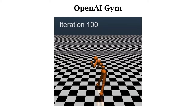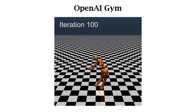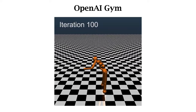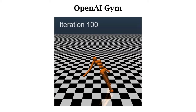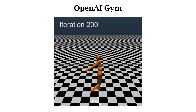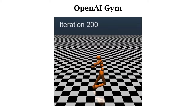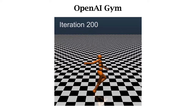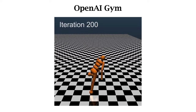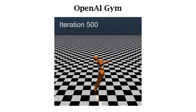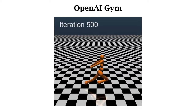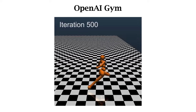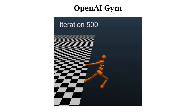After some iterations, the humanoid becomes able to stand and hold it for a few seconds. After hundreds of iterations, the agent can even run. With more training, the policy gets better and better, and the agent runs longer and faster.